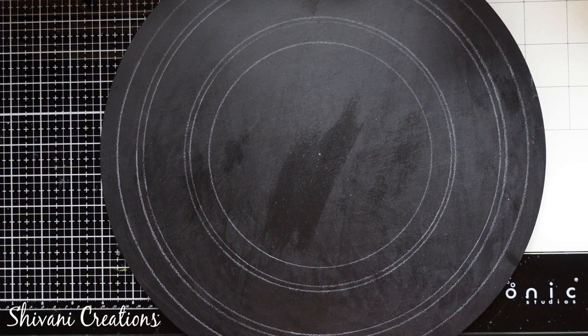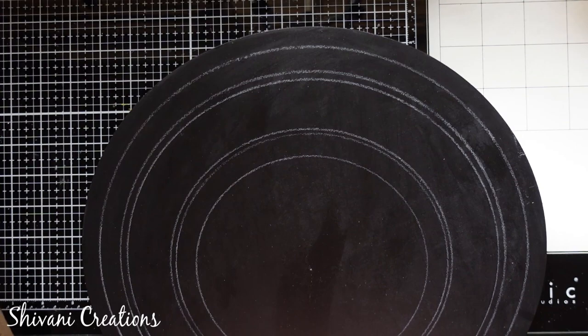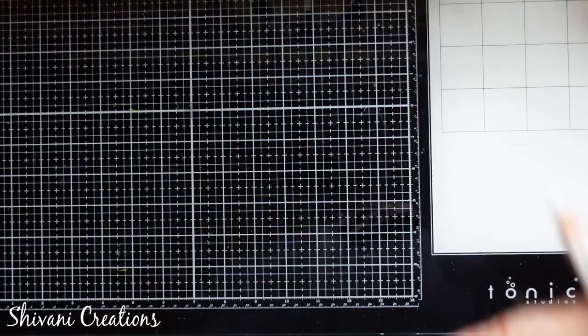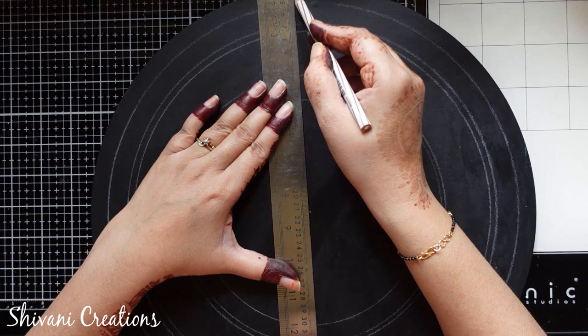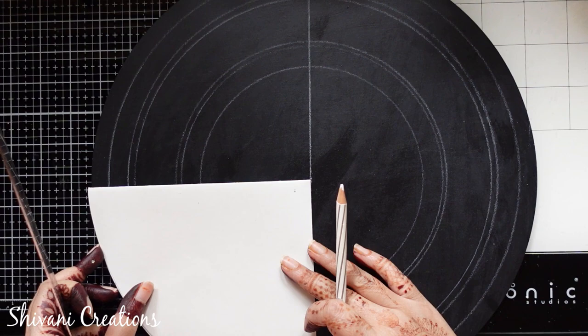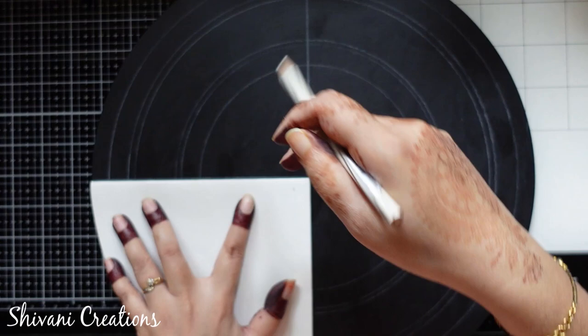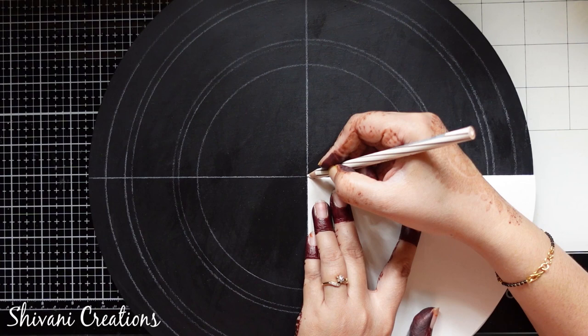And now to divide this in 4 equal parts, again I am taking my stencil. This is the center part. On back side of this we have the hook, so I just marked exactly in the center. Now I am just making one line by joining the center point straight line and then taking my template and creating the horizontal line.